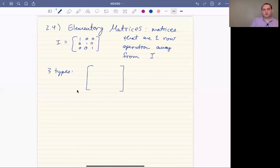So the first is where you take any row and you multiply by a non-zero number. Say you have four, zero, zero, zero, one, zero, zero, zero, one. Okay, that's the first type of elementary matrix. So you've taken the top row or whatever row and multiplied by a non-zero number.